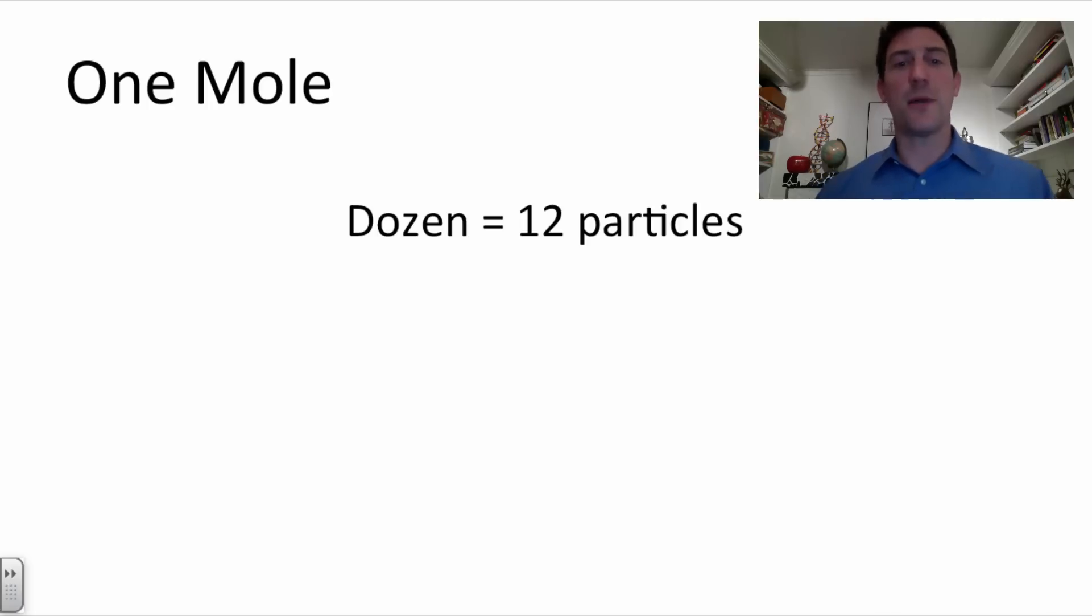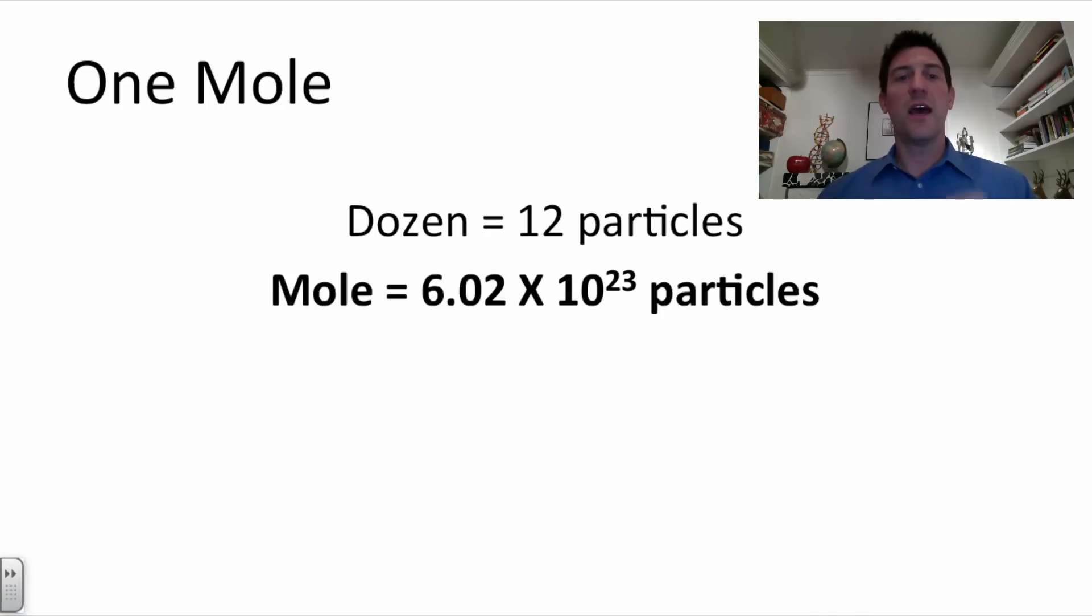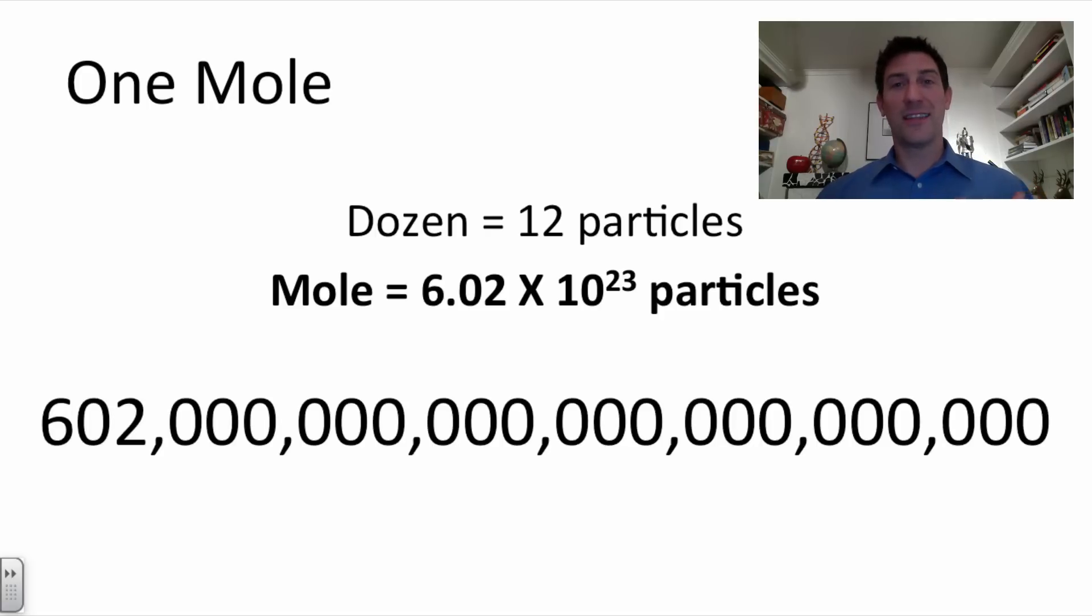So let's talk about the mole. We said a dozen is 12 particles. Well if a mole isn't a dozen what is it? A mole is 6.02 times 10 to the 23rd particles. Now that's a huge number. That's a number like this: 602 sextillion with a whole lot of zeros behind it. Now why do we need a number that big? Let's go back to the last screen. We need a number that big because atoms are so small.